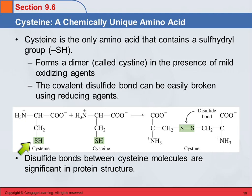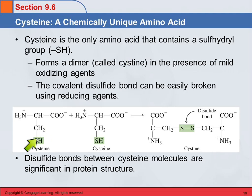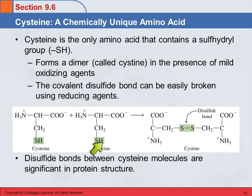It can form a dimer. Cysteine is the amino acid, and the dimer is called cystine. It can form a disulfide bond between these two sulfhydryl groups. We saw that when we talked about thioethers, that they can form a disulfide.